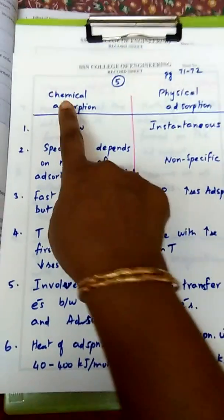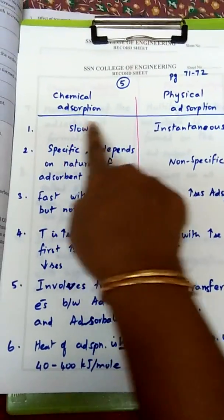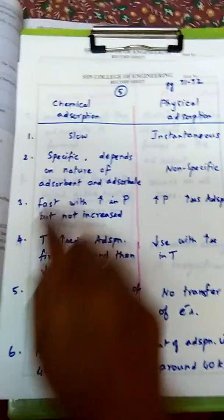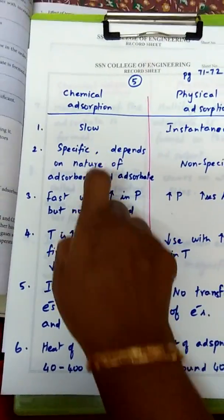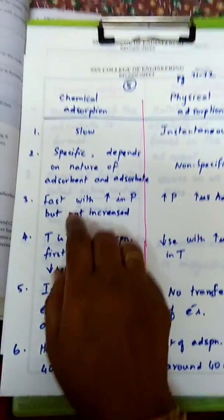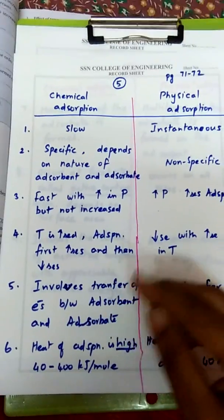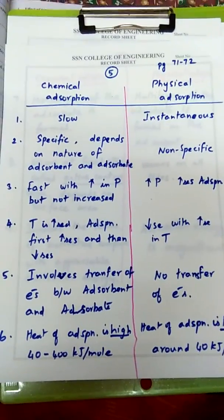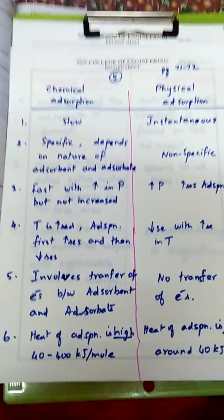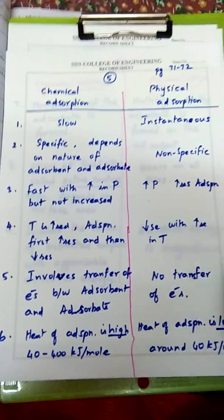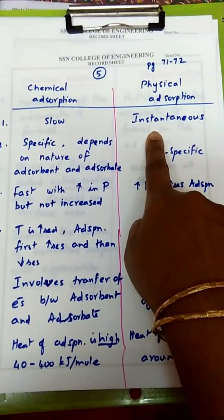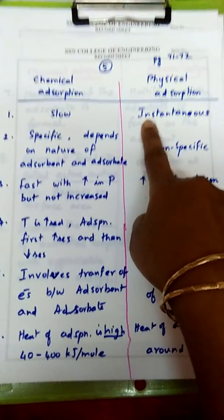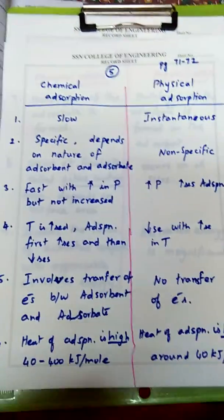Now the difference between chemical adsorption and physical adsorption. Chemical adsorption is a slow process because a chemical bond is formed between the adsorbent and adsorbate, hence it is a slow process. Physical adsorption is a quick process — it is termed an instantaneous process.